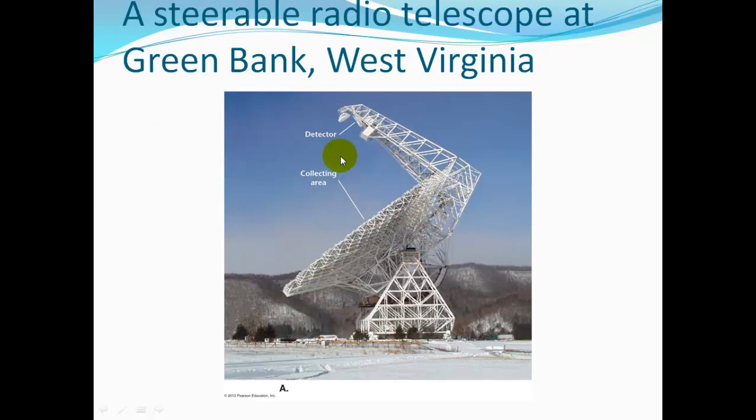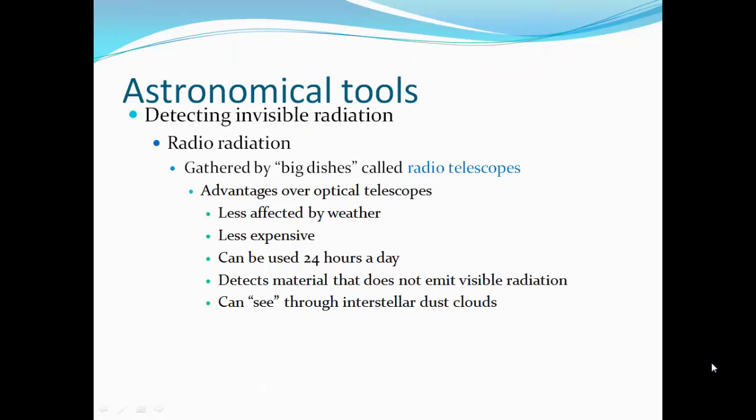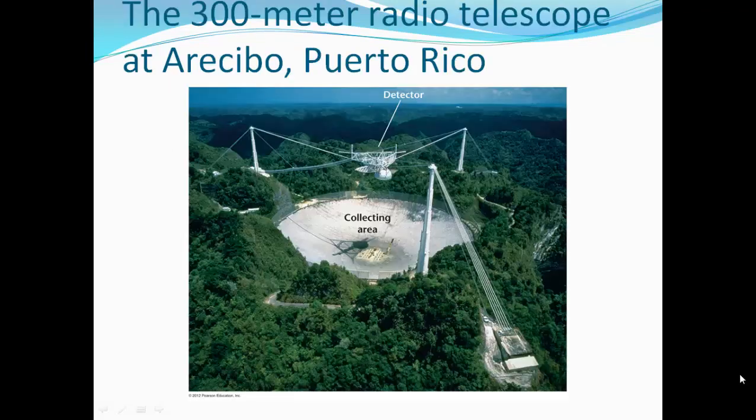The detector is measuring what's collected. Advantages over optical telescopes: less affected by weather, less expensive, can be used 24 hours a day, detects material that does not emit visible radiation. You can see through interstellar dust clouds as well. Very useful. There's a 300-meter radio telescope in Puerto Rico. Here's the collecting area, very large, with the detector area here.